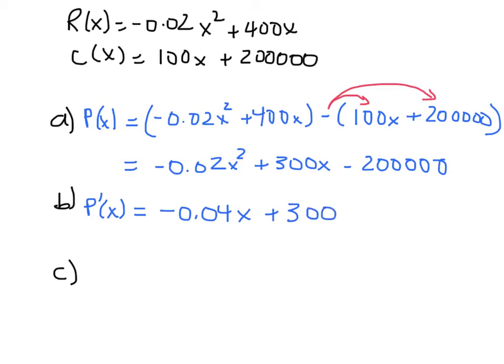And then finally, to compute the marginal profit at a production level of 2,000 widgets, we simply plug 2,000 into this equation where x is. And I've already done that on my calculator, and you can verify my calculations. But this turns out to be 220 dollars, 220 dollars per widget.